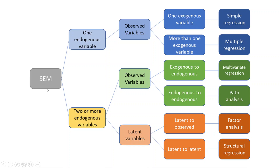Let's try to understand this flowchart. In structural equation modeling, if we have one endogenous observed variable and one exogenous observed variable, we use simple regression. If there are more than one exogenous variables, we use multiple regression. If there are two or more endogenous observed variables and we want to study the relationship from exogenous to endogenous, we use multivariate regression. For endogenous-to-endogenous paths, we use path analysis. If we have two or more endogenous variables with latent variables and want to study the relationship of latent to observed variables, we go for factor analysis. For latent to latent, we use structural regression.